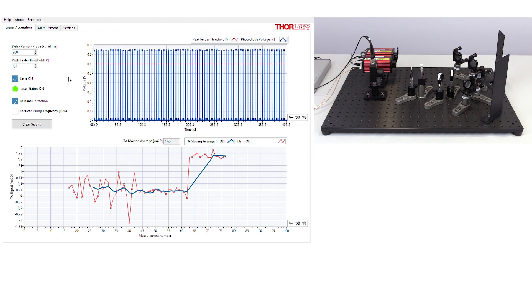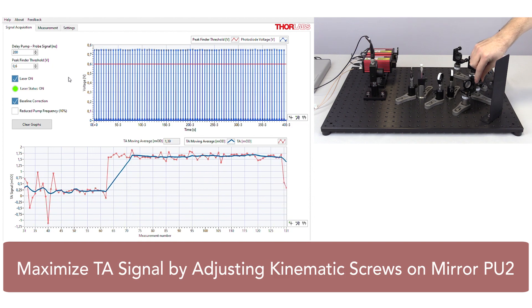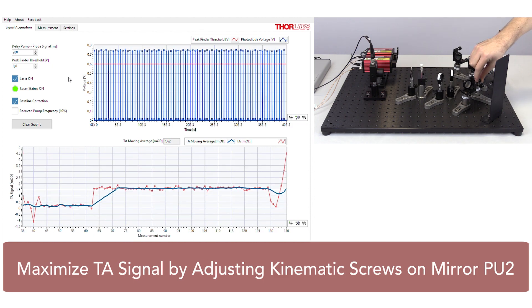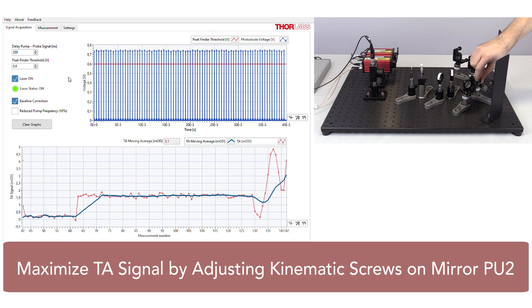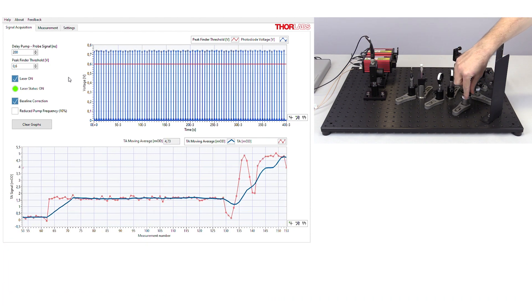Using the transient signal live feed graph for guidance, adjust one knob on the mirror to see how the signal responds. This is the red trace in the lower graph. After one axis is maximized, adjust the second one.